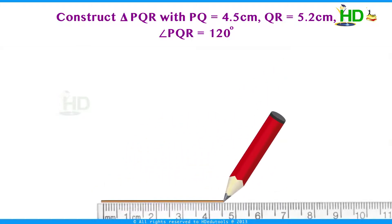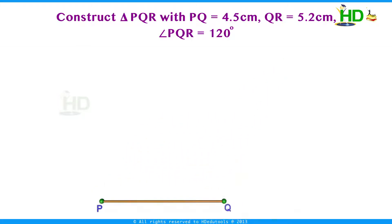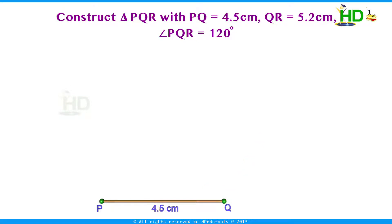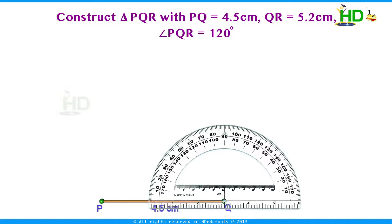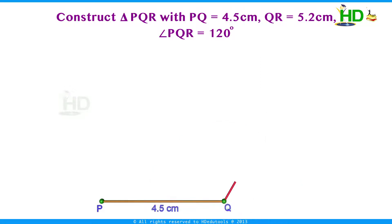First draw the line segment PQ = 4.5 cm. Now with Q as the center, draw a 120 degree angle. To draw this angle, you can follow two methods. One is by using a protractor: place the center of the protractor at Q, mark 120 degrees, and join these two points to get the 120 degree angle.